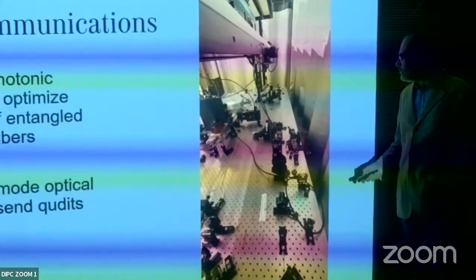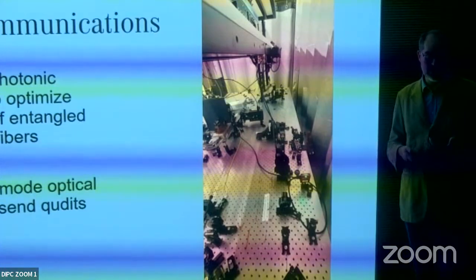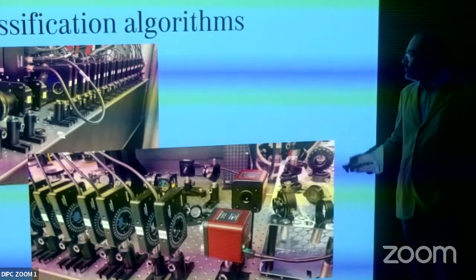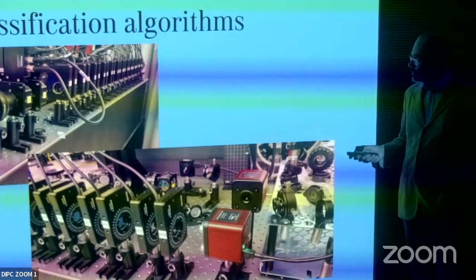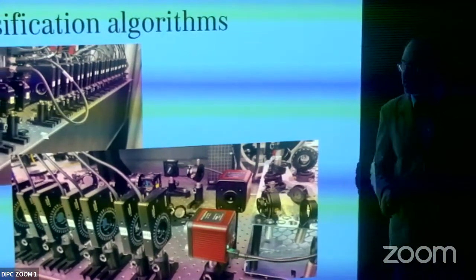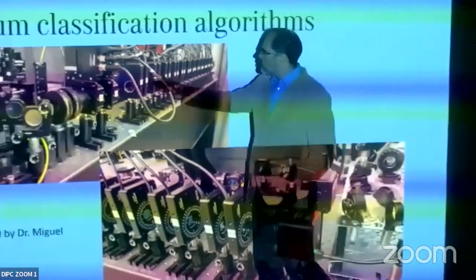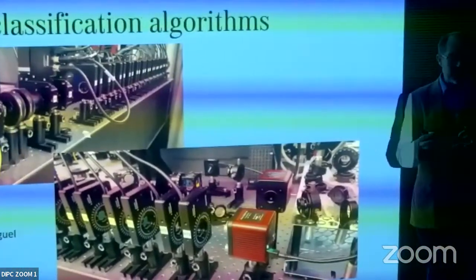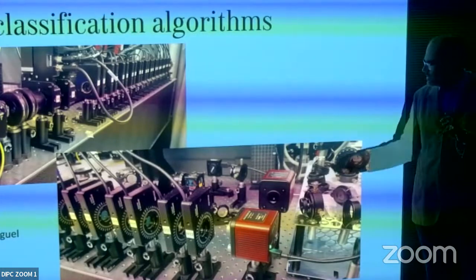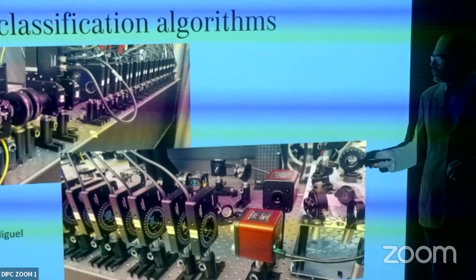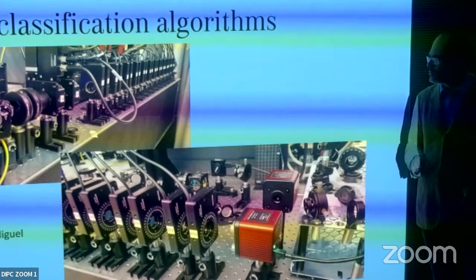Besides that, we are using entangled photons for quantum communications — testing them in multimode fibers and studying entanglement robustness. We're also working on experiments using many wave plates (quarter-wave and half-wave plates) controlled independently, running a machine learning algorithm where the system iterates until it can classify different polarization states in free air. This is a collaboration with Multiverse Computing.